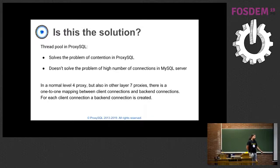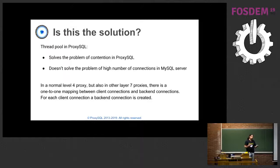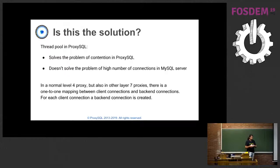A lot of proxies - whether layer 4 or layer 7 - what they normally do is that for every client connection they create one backend connection. So there is a one-to-one mapping. This does not scale because if you have tens of thousands of connections on the proxy, you will have tens of thousands of connections to the database server.